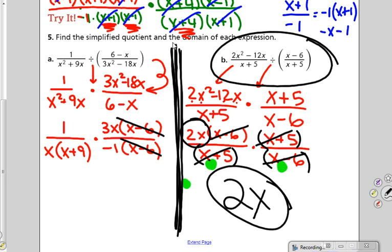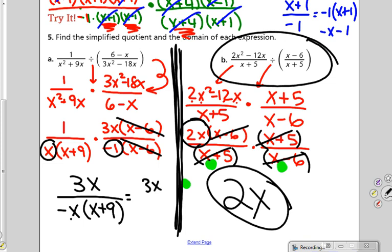The one on the left, 3x is left in the numerator times 1. So negative 1 times x, negative x, times x plus 9. If you leave your answer like that, I'm fine with it. If you wanted to write it as 3x over negative x squared minus 9x, you could as well. I'm okay with either of these as your answer.